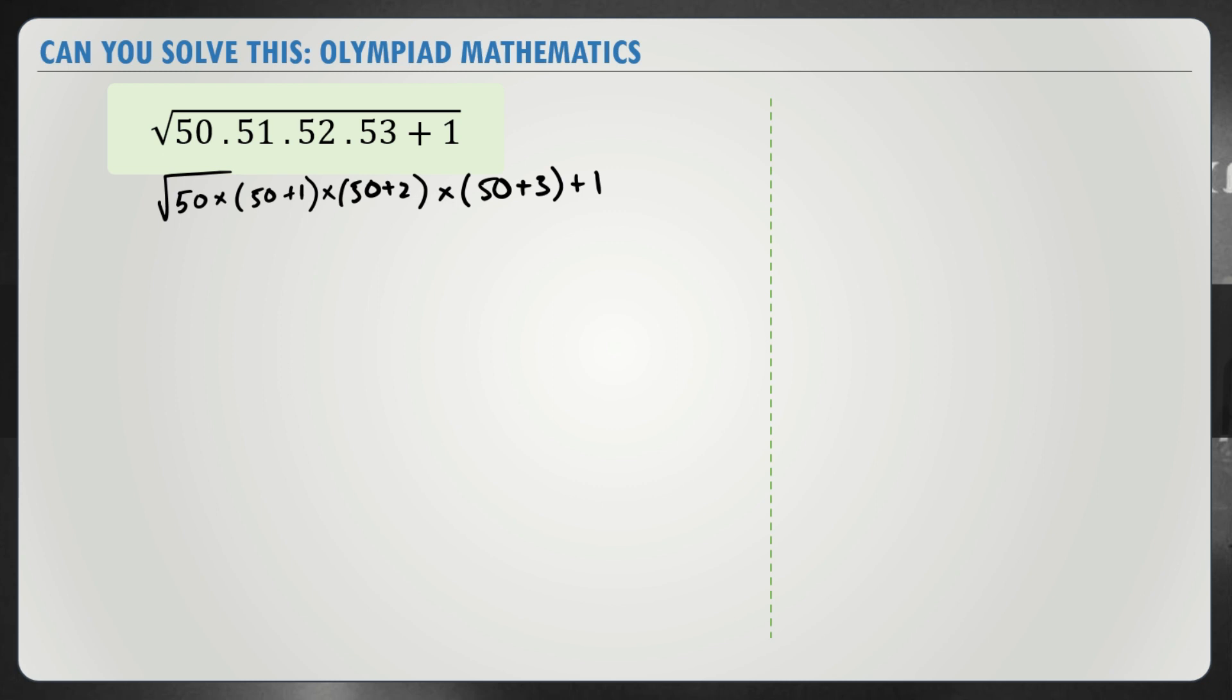So now the first step is to let x be equal to 50, our main number here. So this turns into x into x plus 1 into x plus 2 into x plus 3 plus 1 and we need the square root of the entire thing. We're only going to concentrate on this set of numbers and come back to the one later.